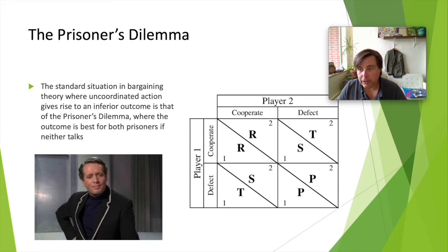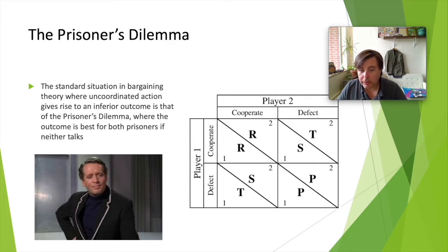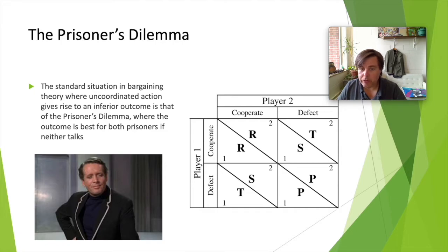The short version of the tragedy of the commons is that everybody has an incentive to over-utilize common resources. Everybody has an incentive to use and abuse clean air; everybody has an incentive to use and abuse clean water — these are common resources. To formalize why that is, we start with the basic idea of a prisoner's dilemma.